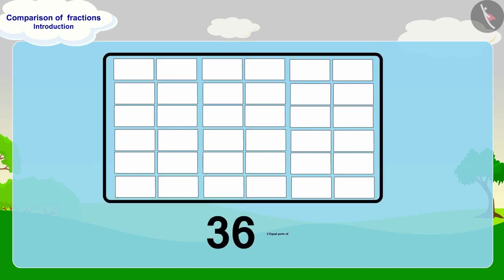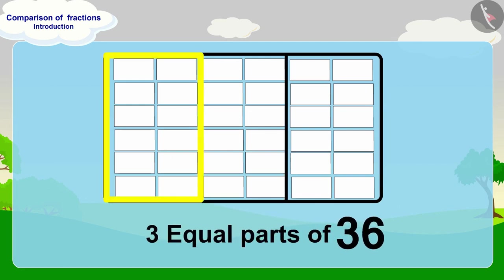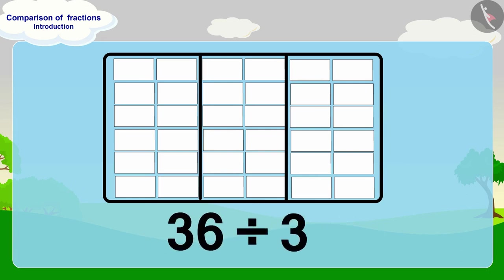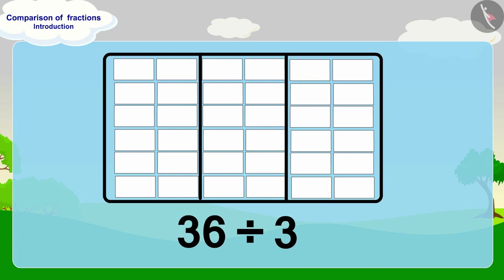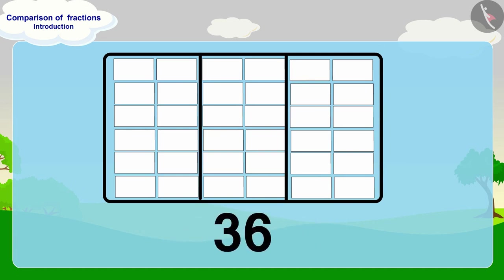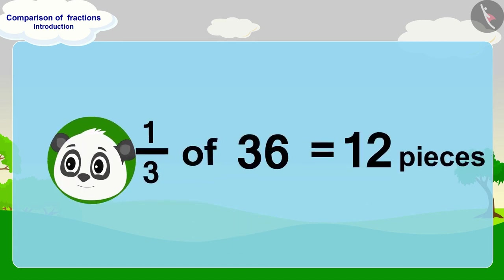If we make three equal parts of 36, then how many pieces will be there in each part? Absolutely right — 36 divided by 3 is 12 pieces. In this way, one third of 36 is 12. Golu wrote his name on 12 pieces of paper.